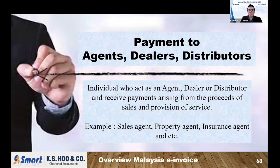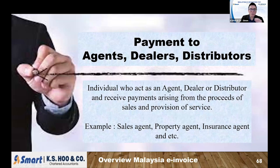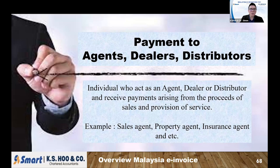The first category — payment to agents, dealers, and distributors — normally refers to sales agents, property agents, insurance agents, or any third-party agent your company has engaged to do sales for you and whom you pay commission. When you pay the commission, the supporting document required is a self-billed invoice issued to yourself. Normally the agent is not required to issue an invoice to you. You are the one required to issue the self-bill because only you know how much commission you are going to pay to the agent. That's why income tax asks the party who pays the agent to issue the self-billed invoice.